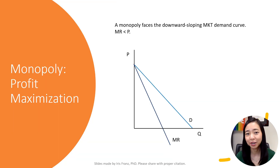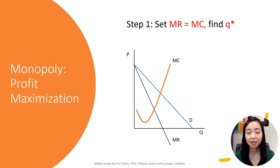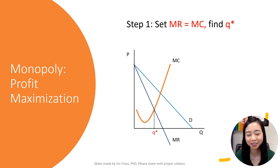Recall that the marginal revenue curve is below the demand curve, and here is your marginal cost curve. Step one is to set marginal revenue equal to marginal cost and find the profit maximizing quantity Q star.